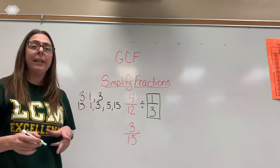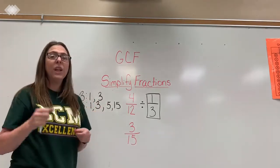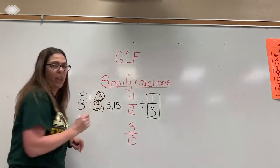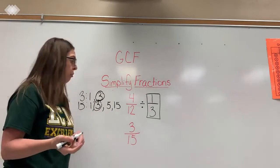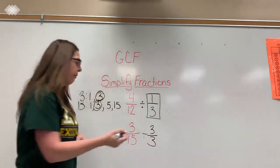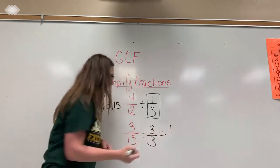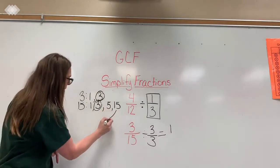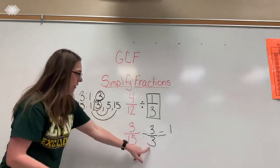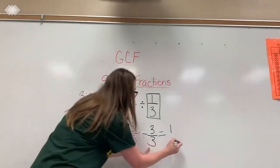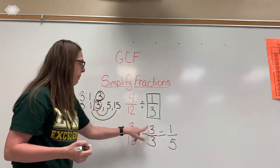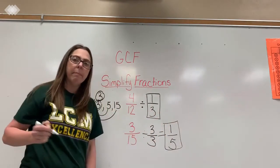Now I have my factors. I'm going to go through those factors and find the greatest number that they have in common. They both have a 3, so that's what I'm going to decide to divide by. So 3 divided by 3 would give me 1, and 15 divided by 3 — I can come back and see it's 5 times 3, so it's got to be the other number used to equal 15. So 15 divided by 3 is 5, 3 divided by 3 is 1, and I have the simplest form.